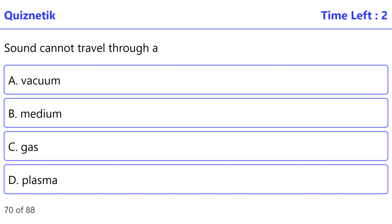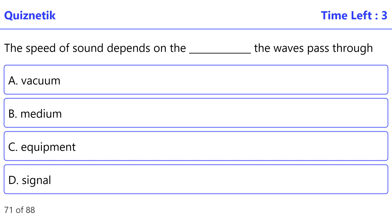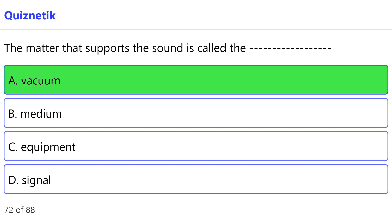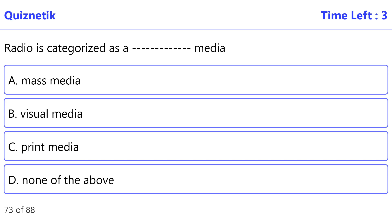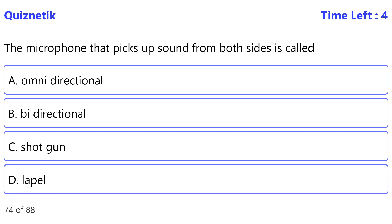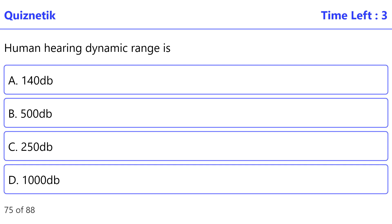Sound cannot travel through: correct option is A — vacuum. The speed of sound depends on the matter the waves pass through. The matter that supports the sound is called: correct option is A — medium. Radio is categorized as: correct option is A — mass media. The microphone that picks up sound from both sides is called: correct option is B — bi-directional.